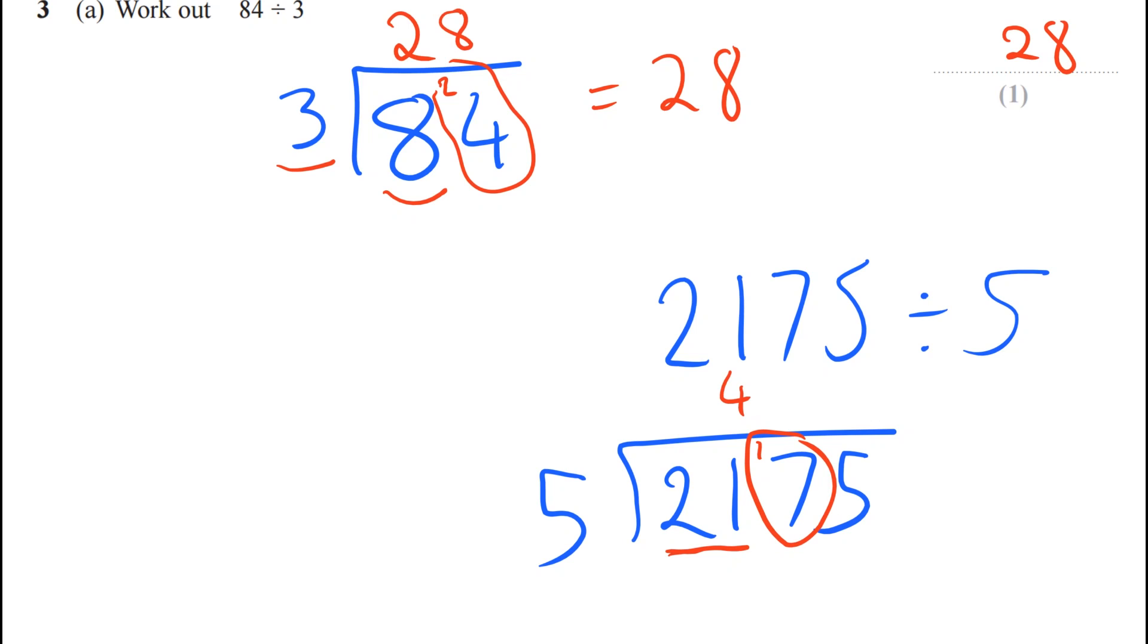Which is 17. How many times does 5 go into 17? 3 times. With a remainder of 2. Because 5 times 3 is 15. And the gap between 15 and 17 is 2.